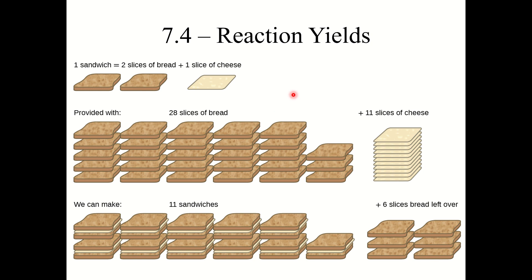I'm going to draw a basic analogy here. Let's pretend we're making some basic cheese sandwiches. We can imagine that we can make one sandwich with two slices of bread and one slice of cheese. So in a way, this is sort of like an air-quotes chemical reaction: two slices of bread plus one slice of cheese forms one sandwich.